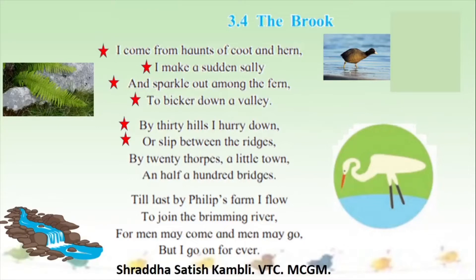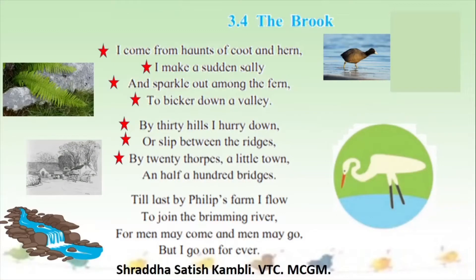'By twenty thops, a little town, and half a hundred bridges.' Thops means small villages where there are very few houses. So the brook passes a town and also goes under half a hundred bridges. These are all the places the brook crosses before it reaches the river — through birds and ferns, down a valley, along the hills, by the thops and through the little town.